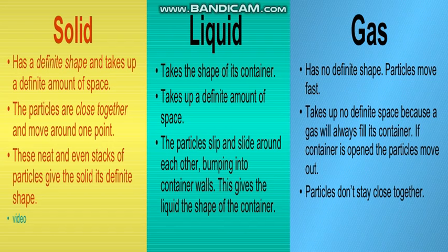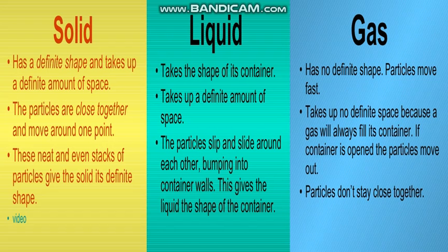The second state is liquid. Water and juices are all liquids. Liquid takes the shape of its container — when you pour water in a glass it takes the shape of the glass, when you pour the same volume of water in a cup it takes the shape of the cup, and when you pour it in a bottle it takes the shape of the bottle. So liquid can change its shape according to the container, because the particle arrangement is not fixed.